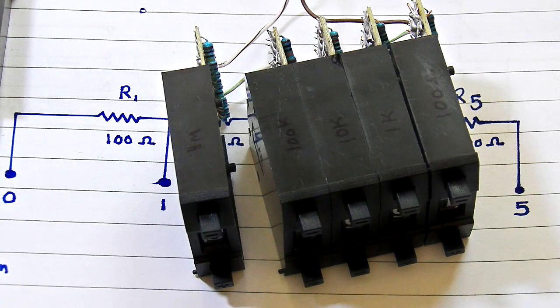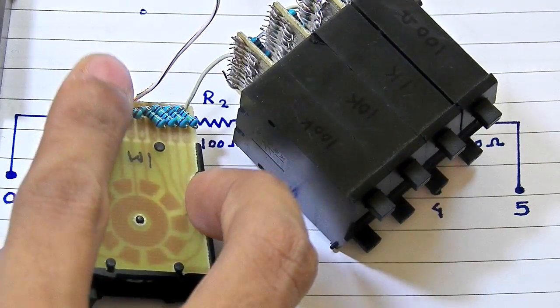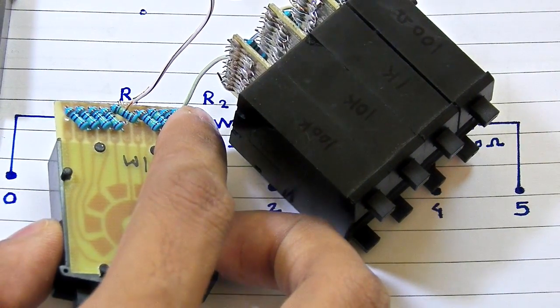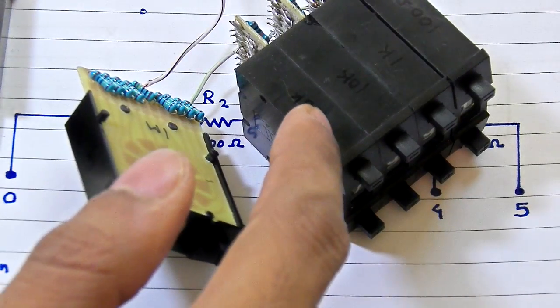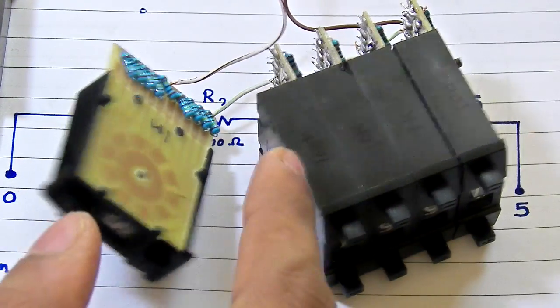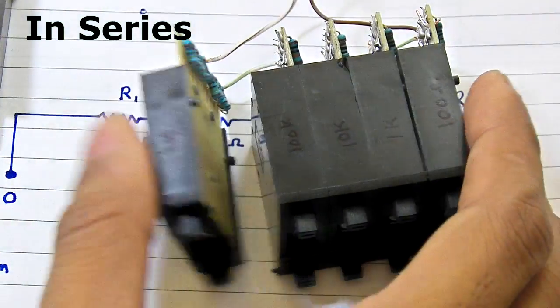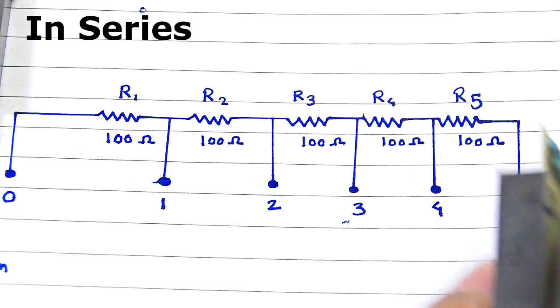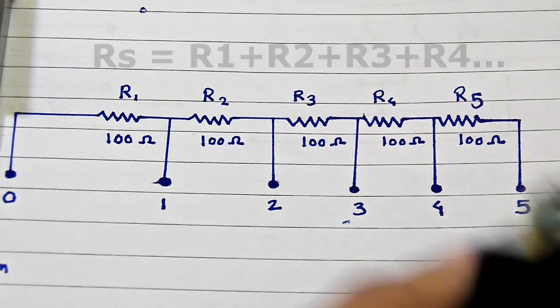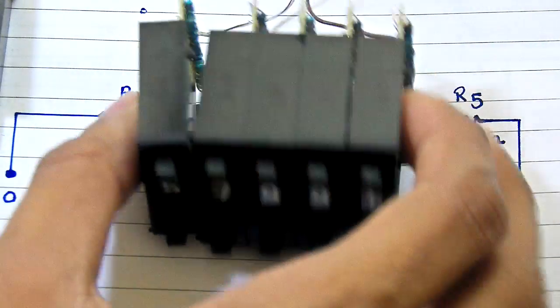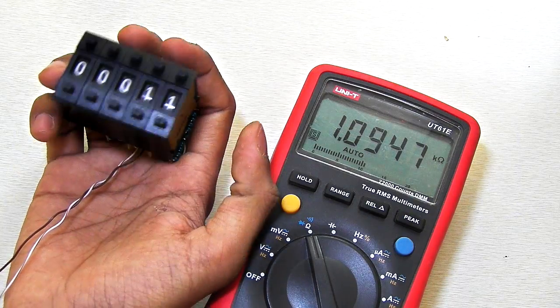You have to connect the common terminal of the previous decade to your output circuit, and the zero terminal goes to the common terminal of your next decade. Basically in this way you are going to connect each decade in series with all the decades, so the total resistance you end up with is basically the series resistance connection of all these resistances, and your decade resistance box is ready to work.